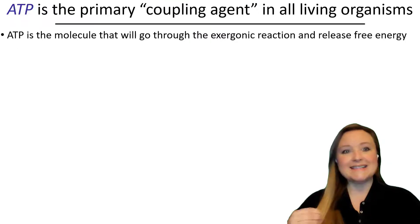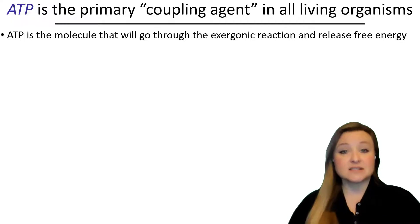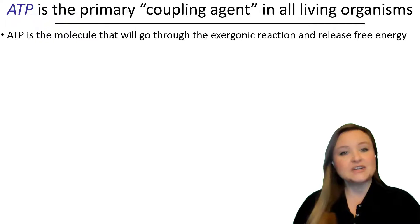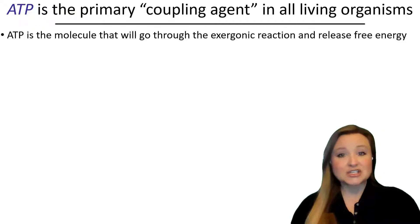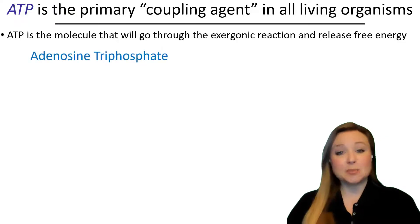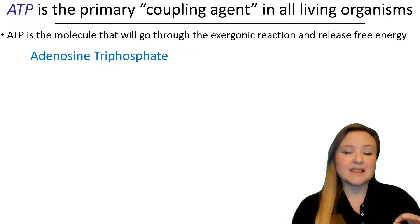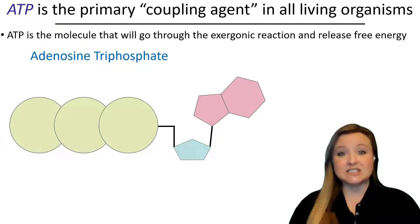In living things, ATP is the primary coupling agent. A coupling agent is the substance that's involved in the exergonic reaction and provides the energy for the endergonic reaction. ATP is the molecule that goes through the exergonic reaction and releases free energy to fuel the endergonic reaction. ATP stands for adenosine triphosphate — this is a molecule I've drawn here called adenosine triphosphate.